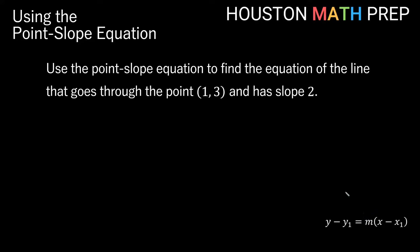We've got our point-slope equation down here in the corner. Our first one says: use the point-slope equation to find the equation of the line that goes through the point 1 comma 3 and has slope 2. So remember we'll need a point and a slope — we have a point and a slope so we can use the point-slope equation. Our point here gives us our x1 and y1 to go in the formula, and if we know the slope is 2 then m is 2.